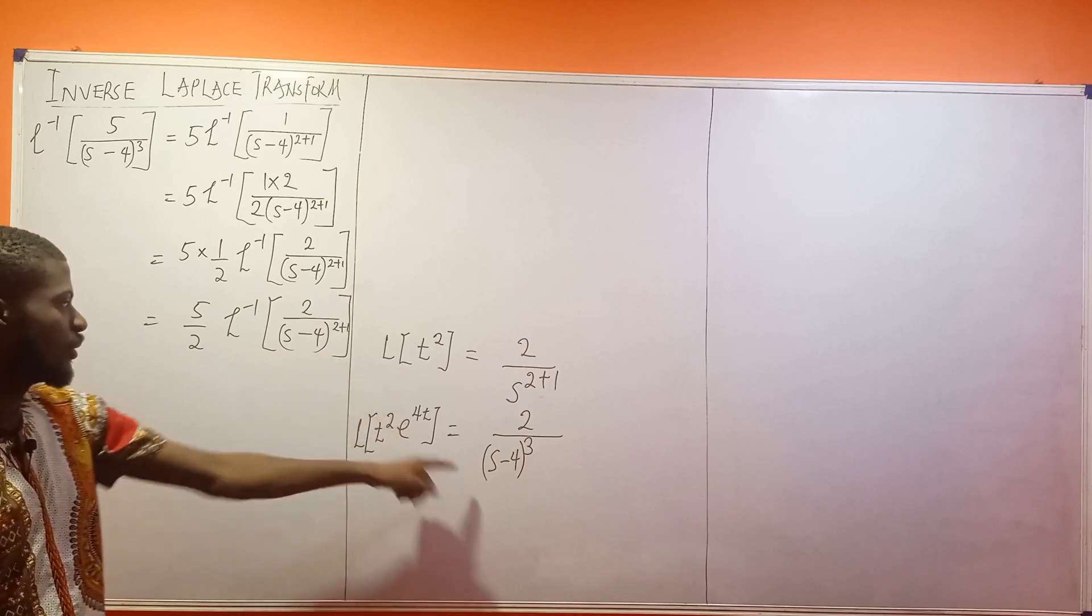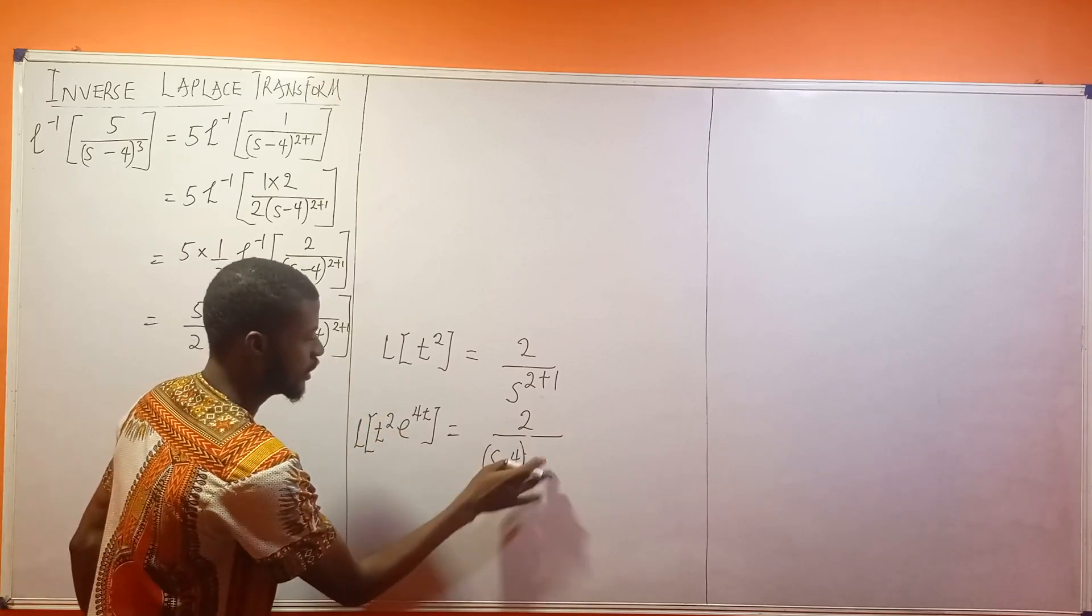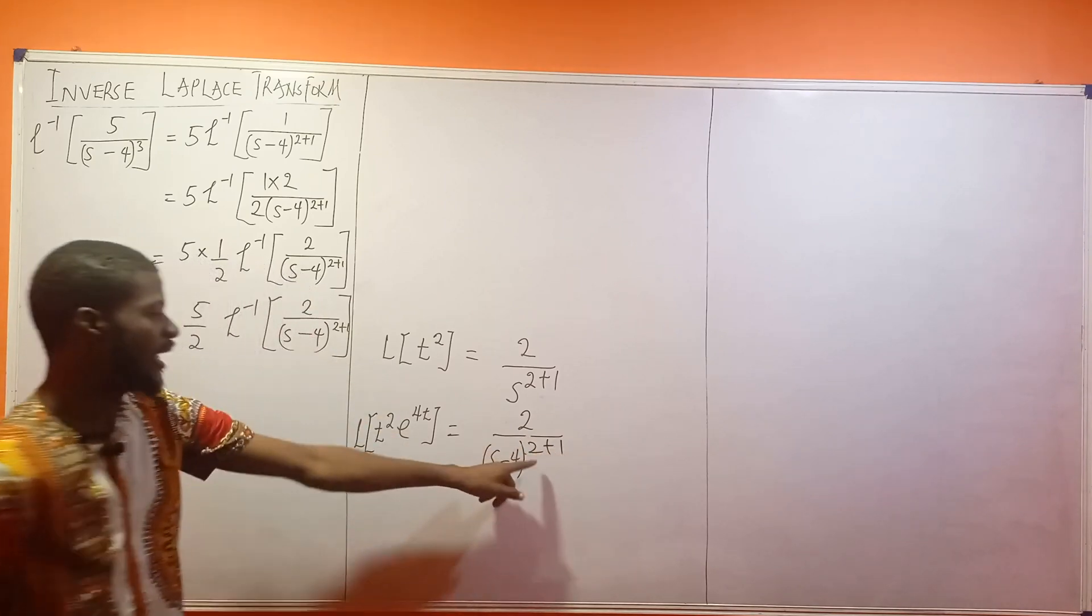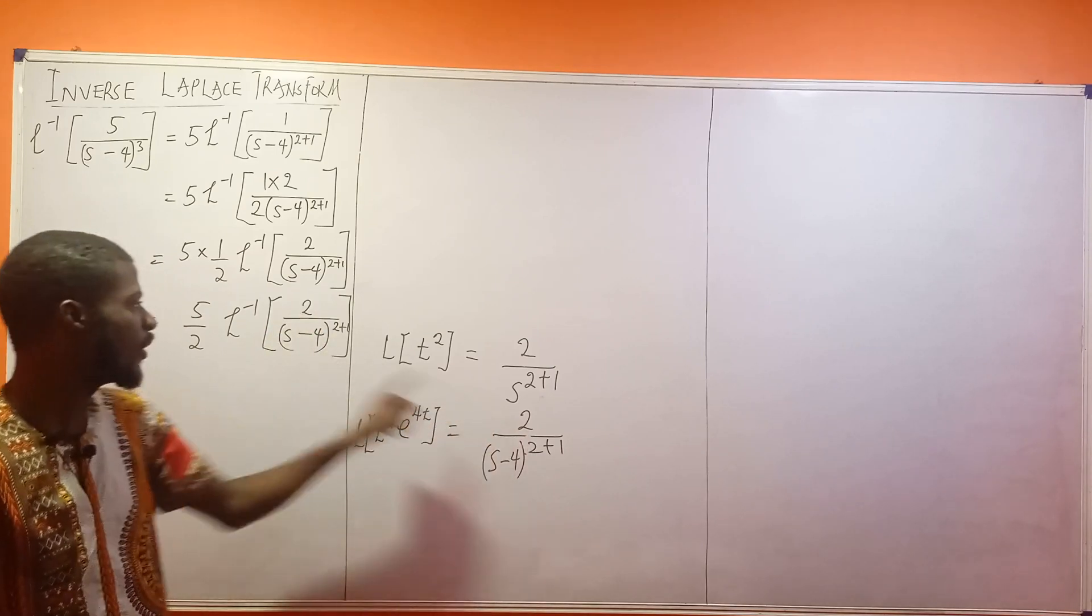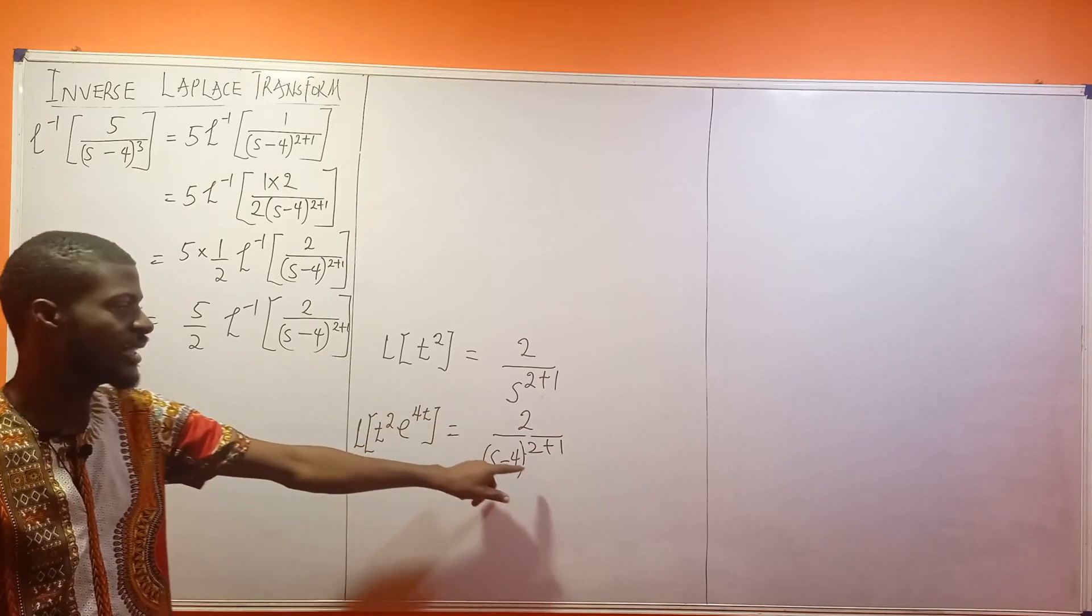Now, what do you think this is looking like? Look at it. This is 2 plus 1. Are these two things not looking the same? This is 2, this is 2, S minus 4, S minus 4, then 2 plus 1, 2 plus 1. So what does that tell me?